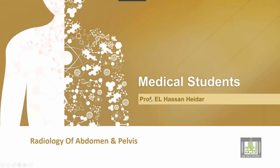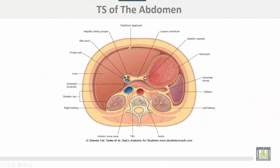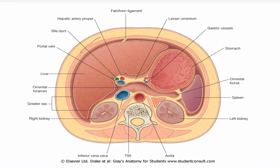Radiology of the abdomen and pelvis. This is a transverse section in the abdomen showing the spleen on the left side, the stomach, the liver on the right side, and kidneys on both sides.